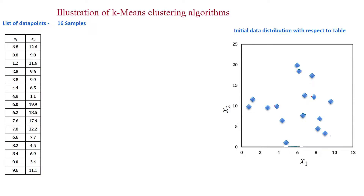Hi viewers, here we will discuss an example of the k-means clustering algorithm. I have taken a 16-sample dataset which has two features: x1 and x2. There is no label output because this is unsupervised learning, so labels will not be given. We have to form k number of clusters, and for that we should give an input value for k.